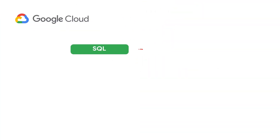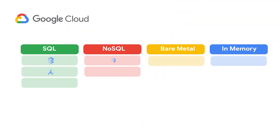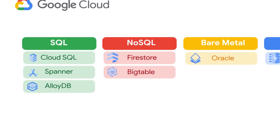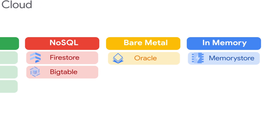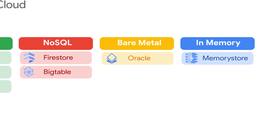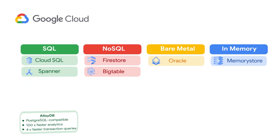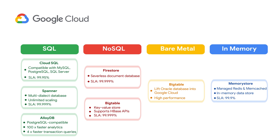Google Cloud provides several database options to cover all database use cases, from relational to non-relational database needs, and even in-memory. Each database has its own features, and the type you'll need depends on your specific use case.